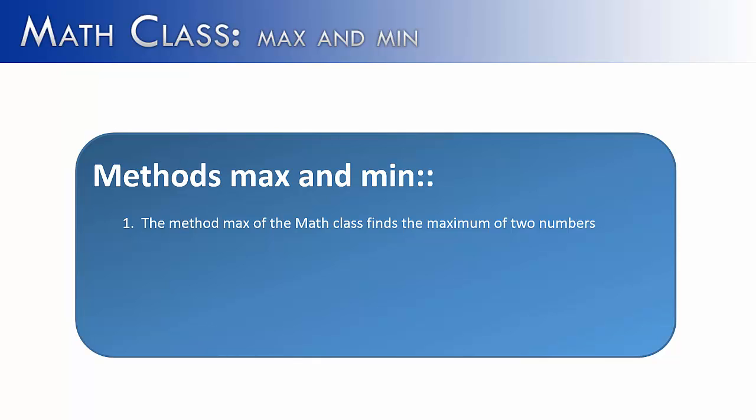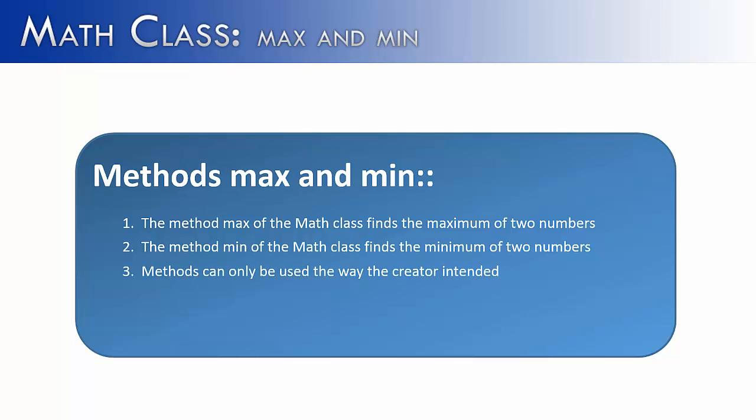The Math class has several methods inside of it, and the two that we focused on in this video are the max and min methods. The max method of the Math class finds the maximum of two numbers, whereas the min method finds the minimum of two numbers. Methods can only be used the way the creator or programmer intended. Even though it would be nice to add a third parameter and find the maximum of three values, we can't do that because that's outside of the scope of what this method can do.